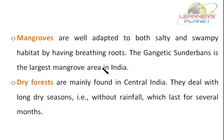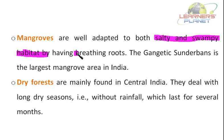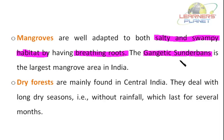There are mangroves, dry forests, scrublands, open forests, and dense forests. Mangroves are well adapted to both salty and swampy habitat by having breathing roots. The Gangetic Sundarbans is the largest mangrove area in India. The dry forests are mainly found in central India and deal with long dry seasons without rainfall, which lasts for several months.